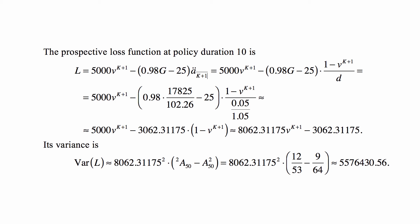Then we write the formula for ä_{K+1} as (1 - v^(K+1))/d. We rearrange the terms so that we have everything only in terms of v^(K+1), and you see that we calculate this to be a linear function of v^(K+1).